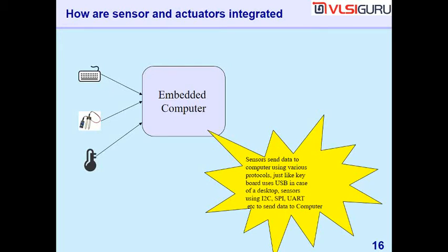Sensors send data to the computer using special protocols. Just like a keyboard uses USB protocol, sensors use I2C, SPI, UART, etc. to send and receive data from the computer. These are the protocols used for peripherals to communicate with the computer. To understand how a sensor is integrated, you need to understand the protocol that sensor follows — that is a key part.